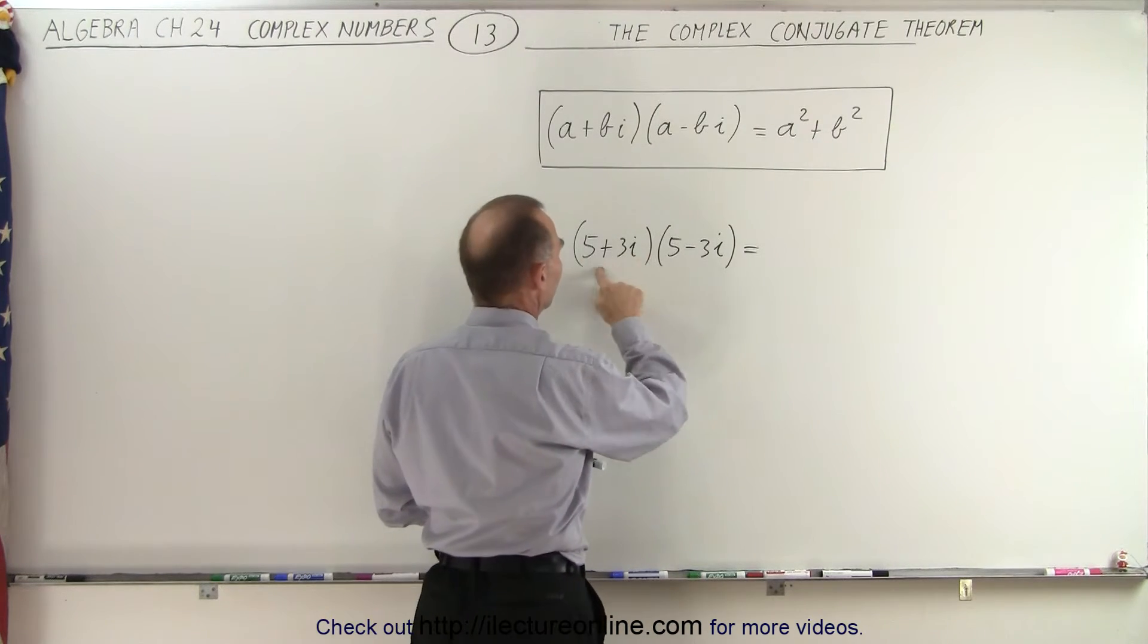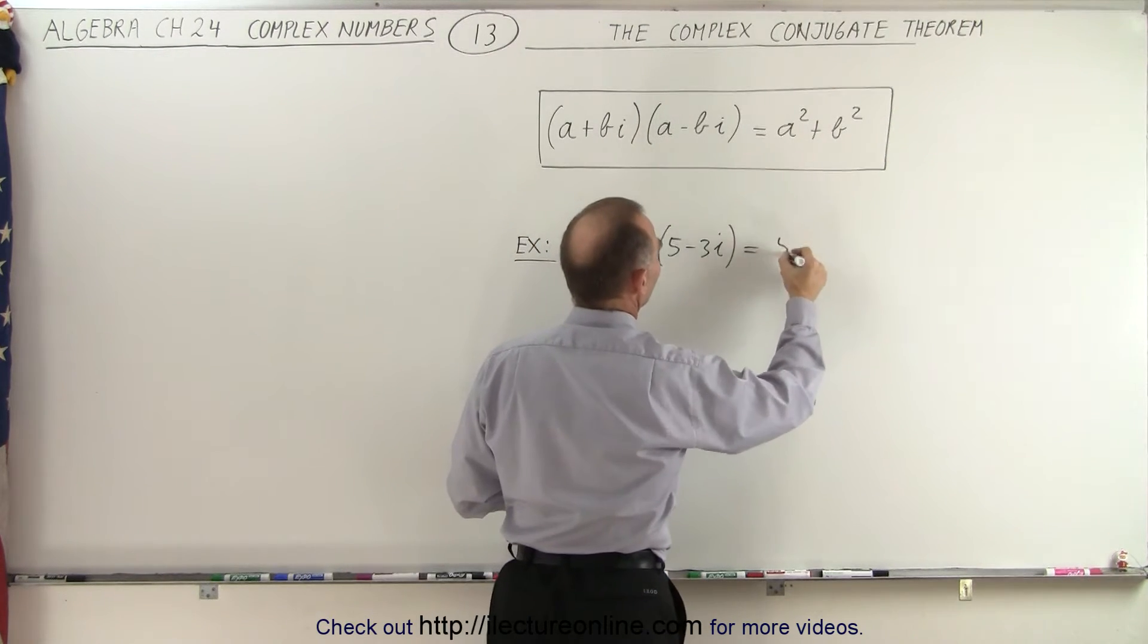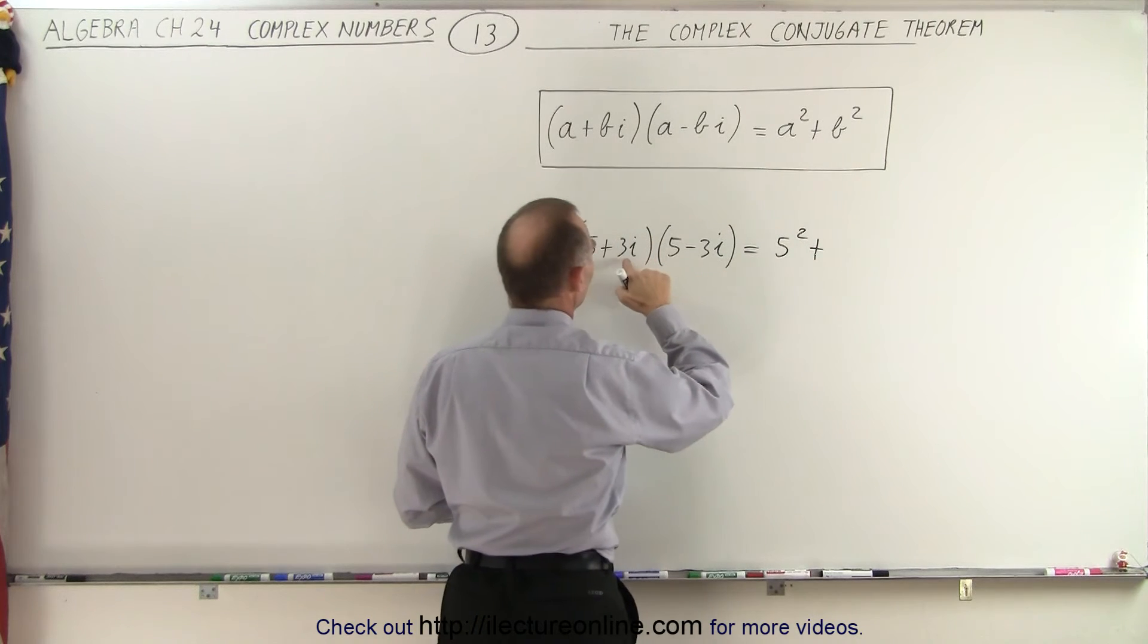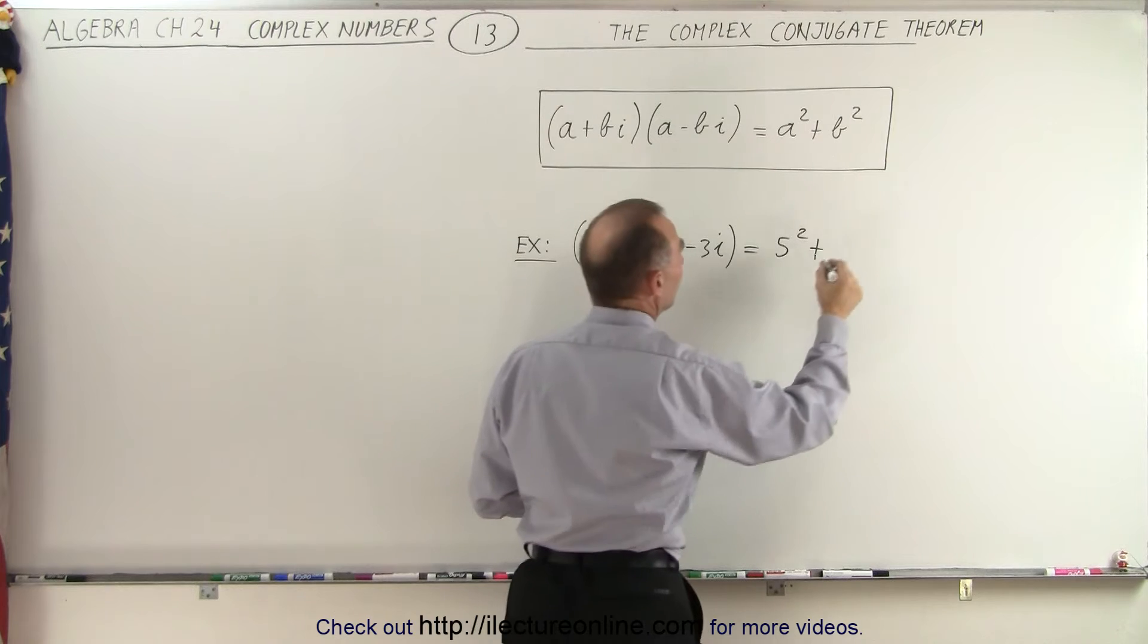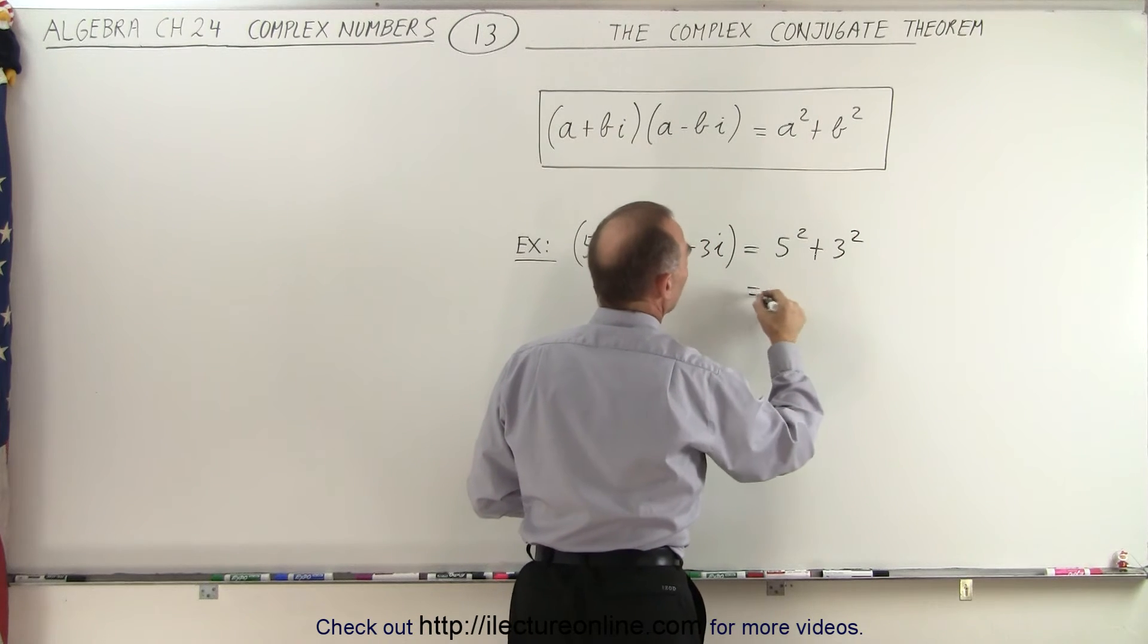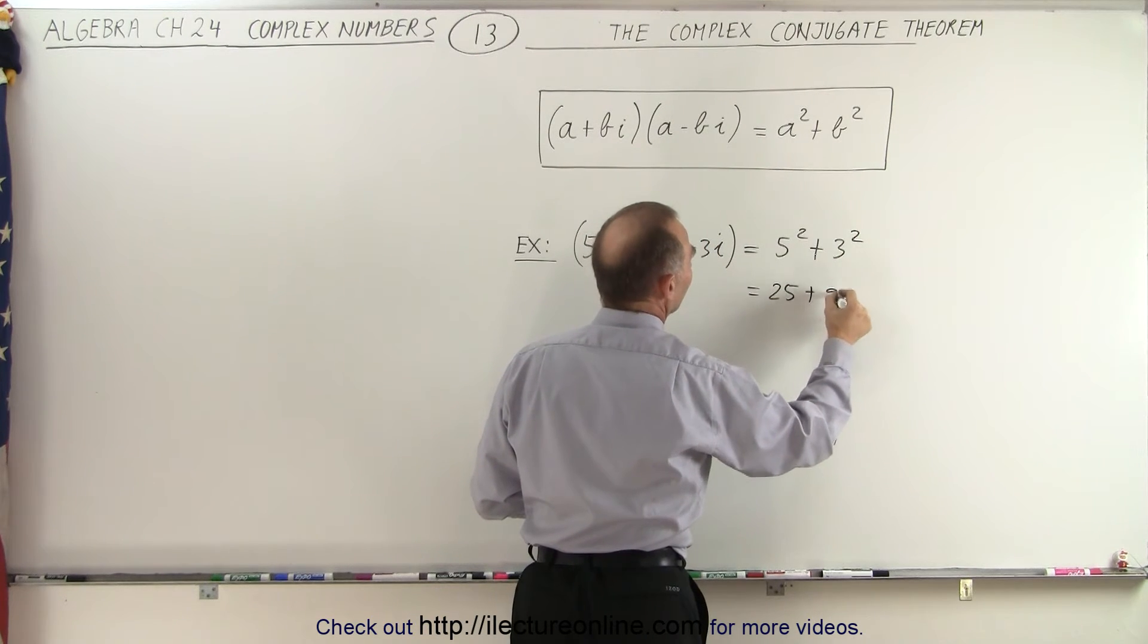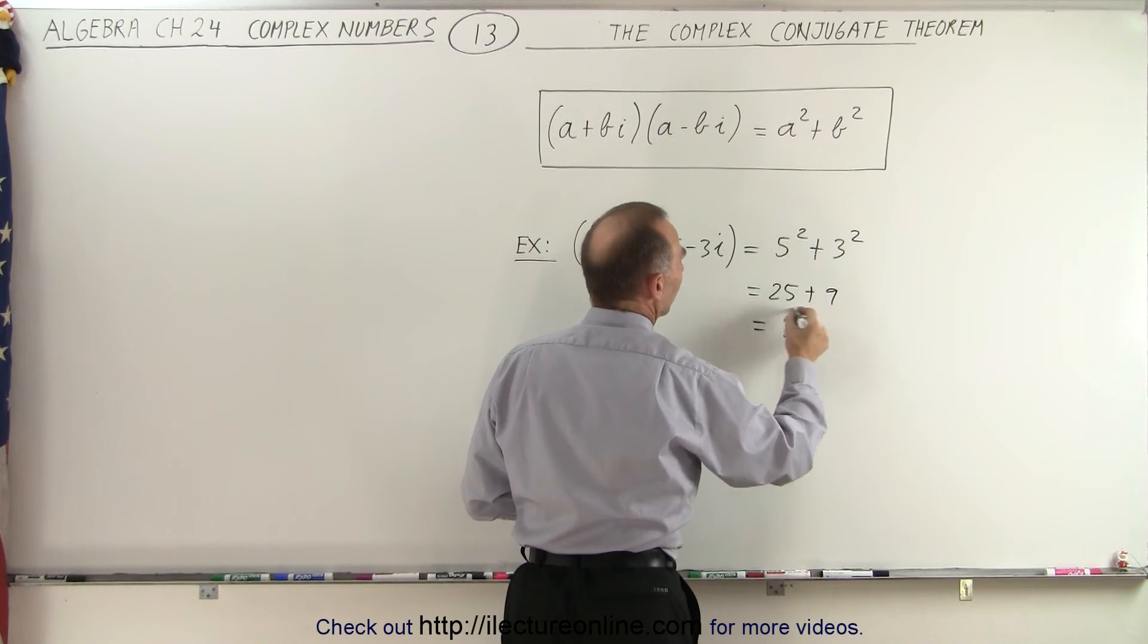Simply, it'll be the first term squared, so it'll be 5 squared plus the last term, but just the coefficient only, we forget about the i, so it would be plus 3 squared. That would be 25 plus 9, which is equal to 34.